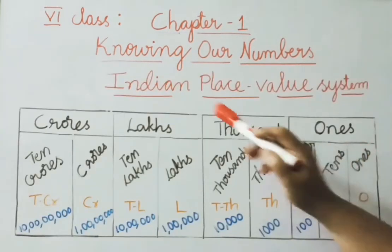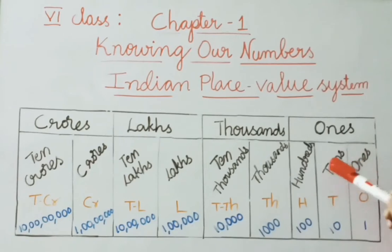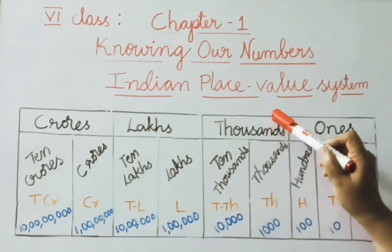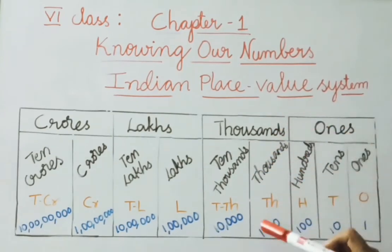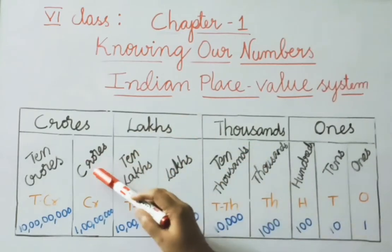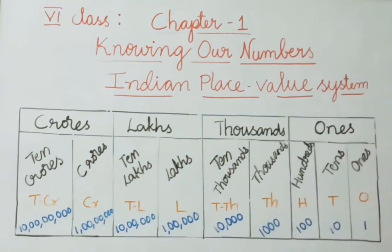See now the Indian place value system. It starts with the ones period: 1s, 10s, and 100s come under the ones period. 1000s and 10,000s come under the thousands period. 100,000s (lakhs) come under the lakhs period. Crores and 10 crores come under the crores period. These periods are helpful for writing number names easily.